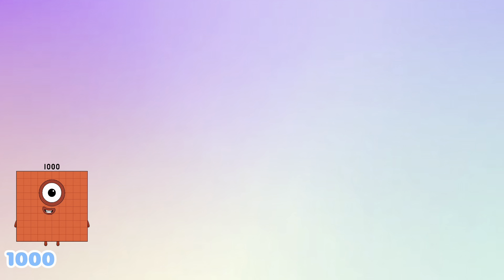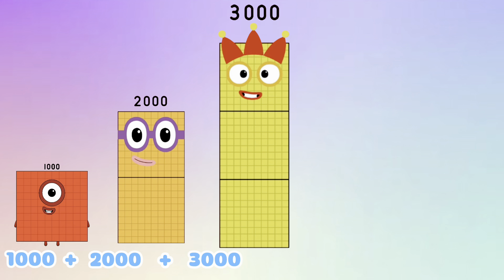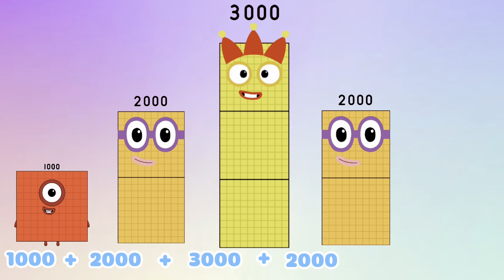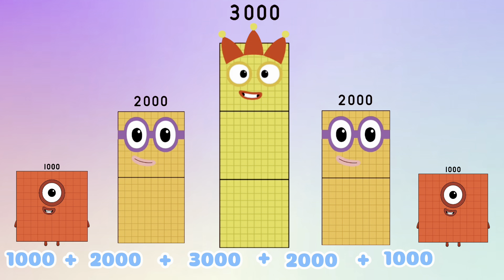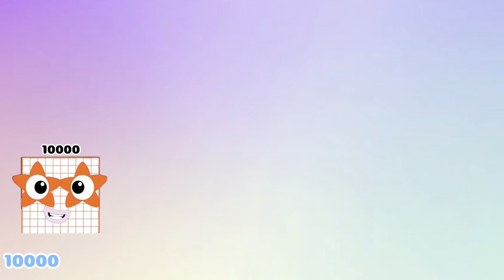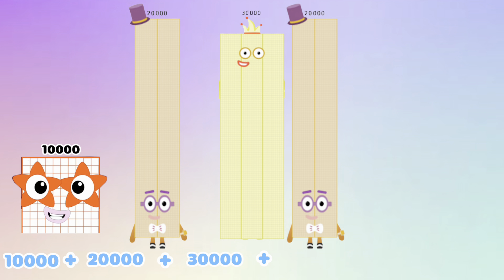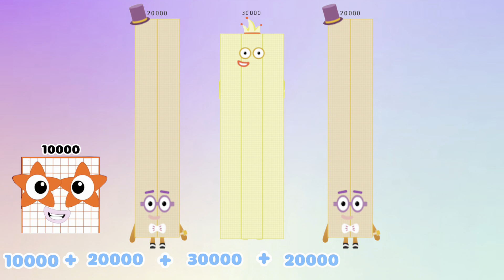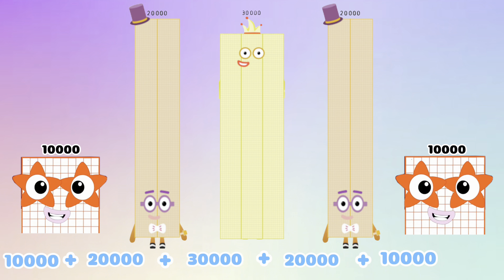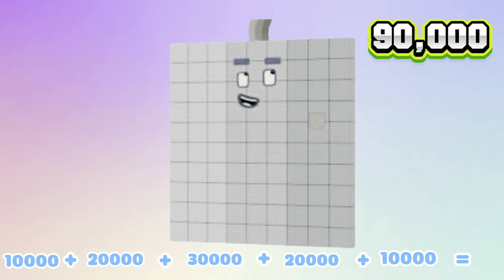Let's try another one! 1,000 plus 2,000 plus 3,000 plus 2,000 plus 1,000 is equals to 9,000. 10,000 plus 20,000 plus 30,000 plus 20,000 plus 10,000 is equals to 90,000.